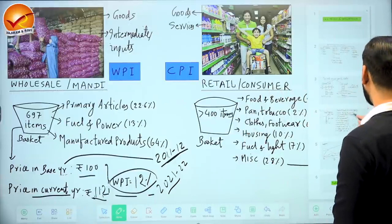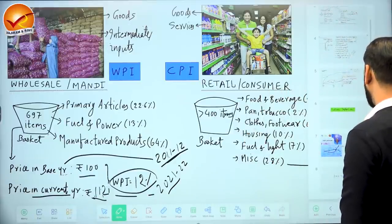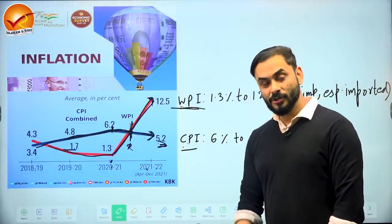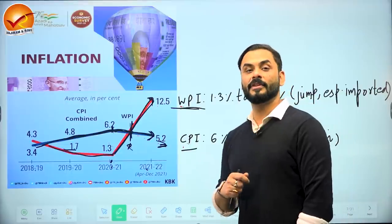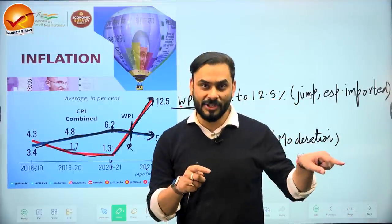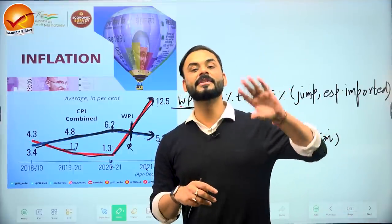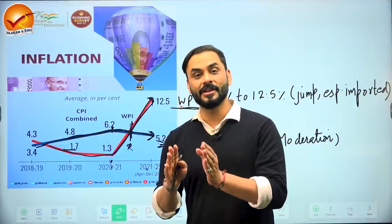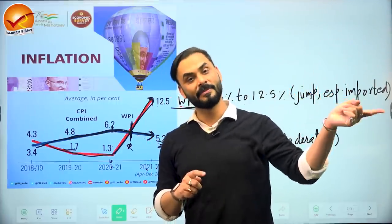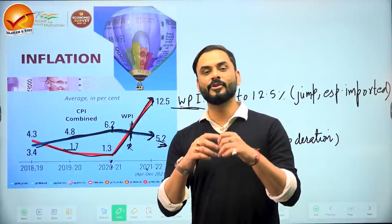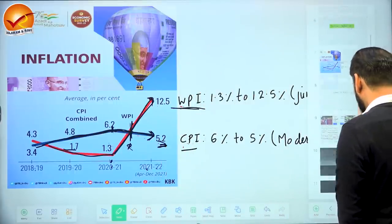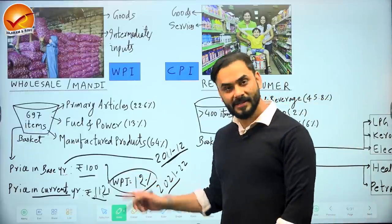So in the graph, when you see WPI at 12.5%, this is how it is measured — comparing the current year's price of the basket of 697 items to the base year 2011-12. If you compare this year's wholesale price to last year, then last year becomes the base year. The reference year used for comparison is called the base year. That's your Wholesale Price Index concept.